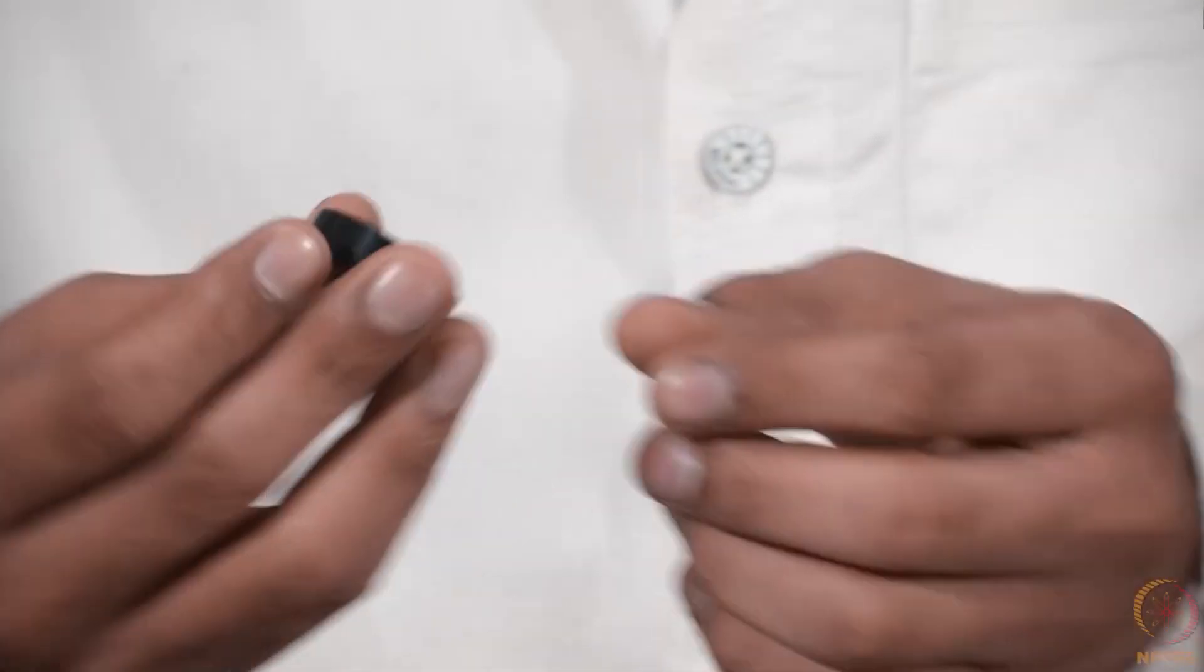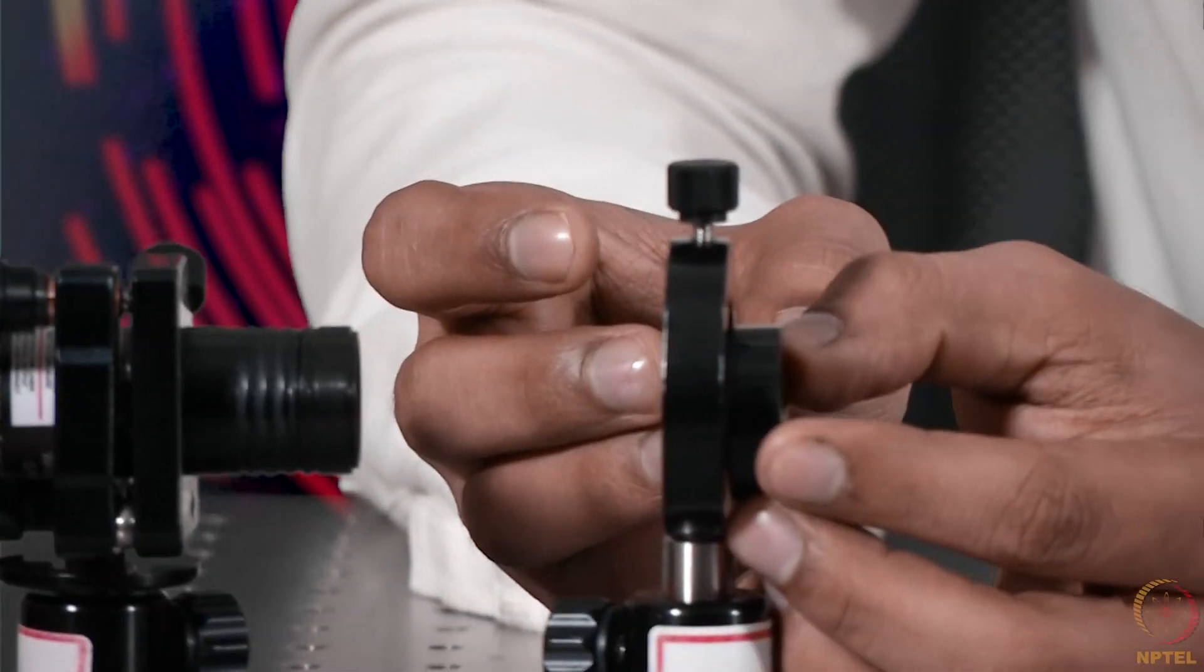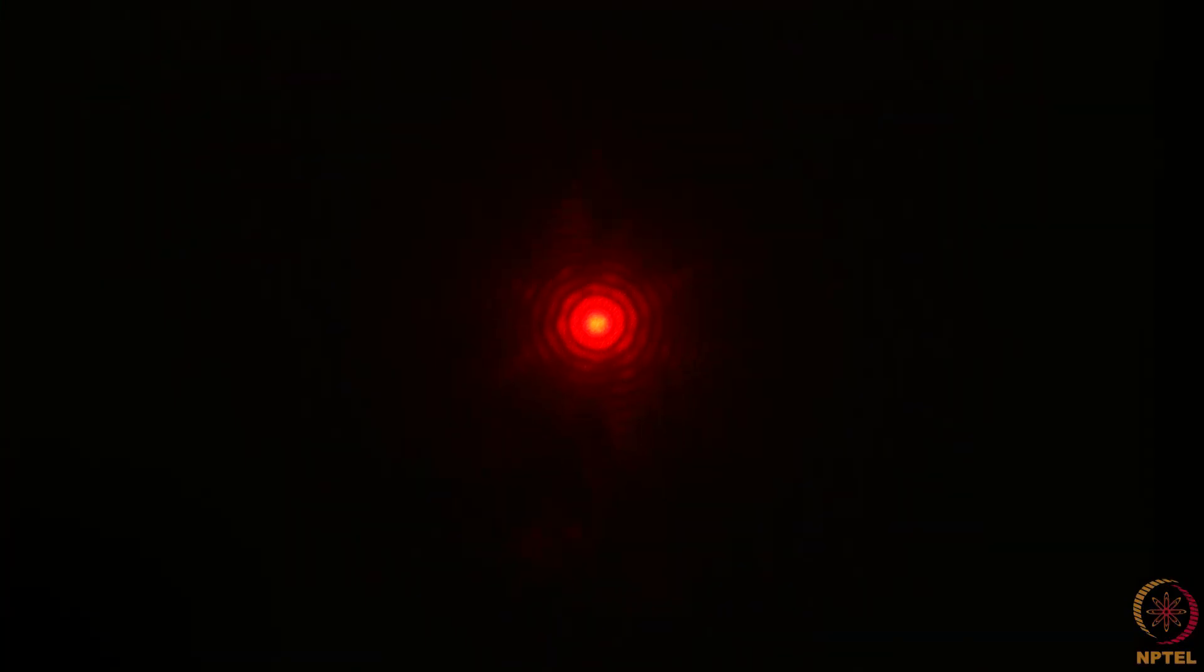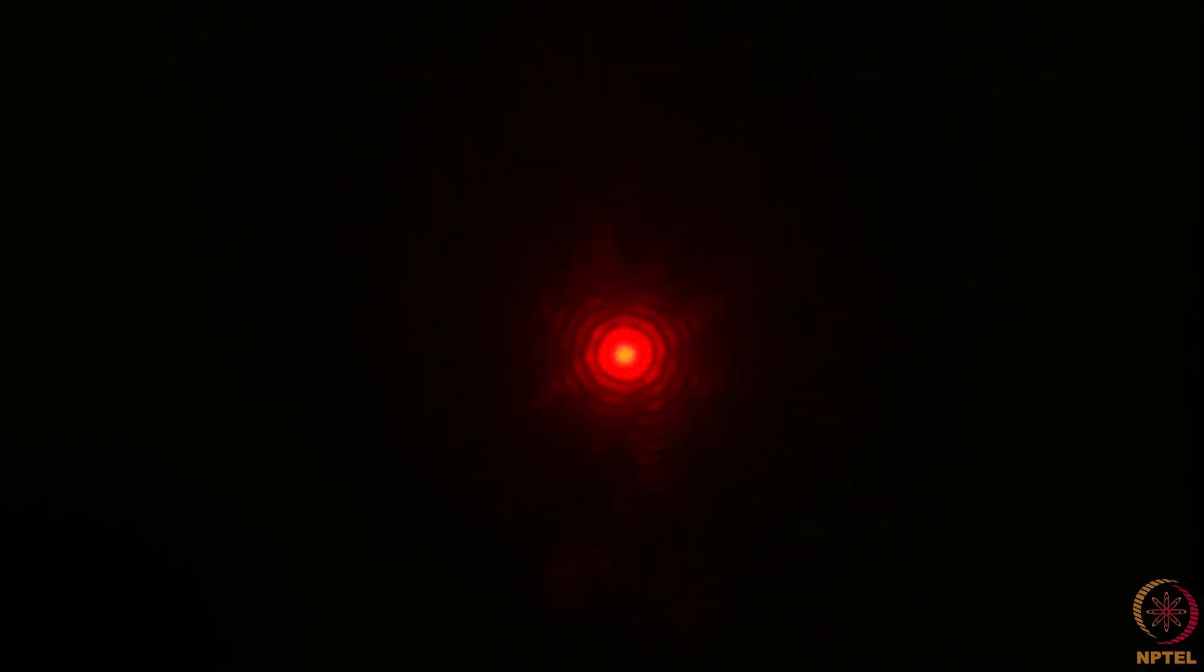Now if this is a circular aperture as I have shown you earlier and so now see the diffraction pattern due to the circular aperture. This is our circular aperture and this is the diffraction pattern that we get for circular aperture.